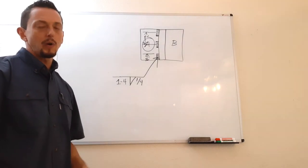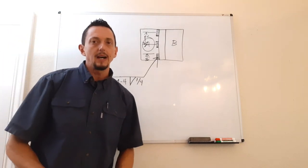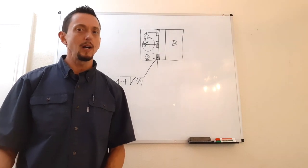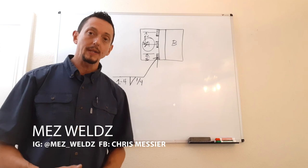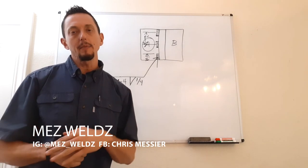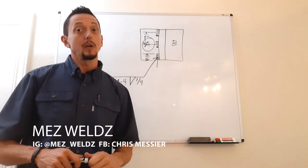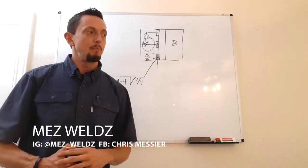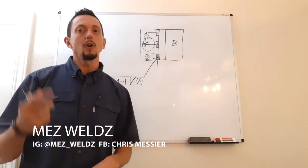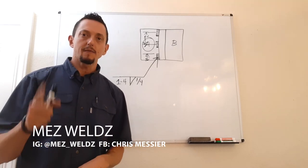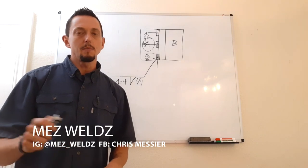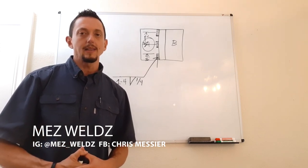That covers the basic elements of the system for fillet welds. Hopefully you found this helpful. There will be more in-depth videos on other types of welds including groove welds, which are more complicated and have more joint configuration information in the weld symbols. Once you understand how it works, it becomes fairly simple. Please don't forget to like the video and subscribe to the channel so you don't miss more good information.